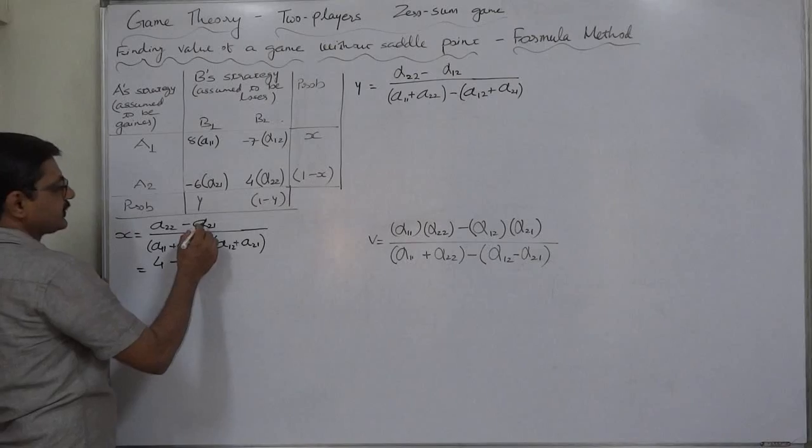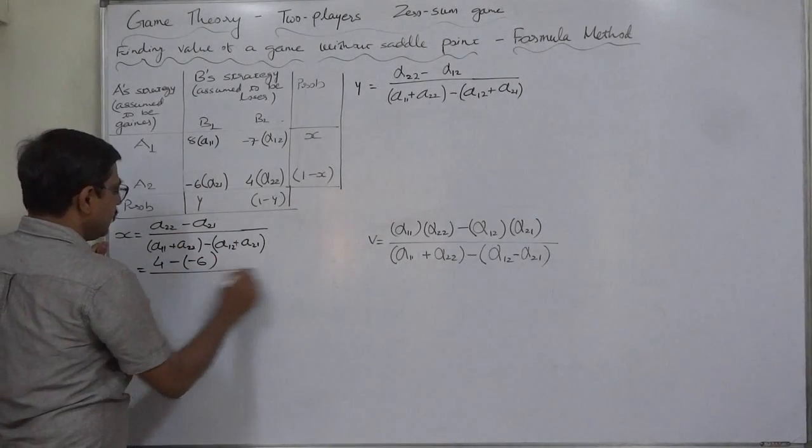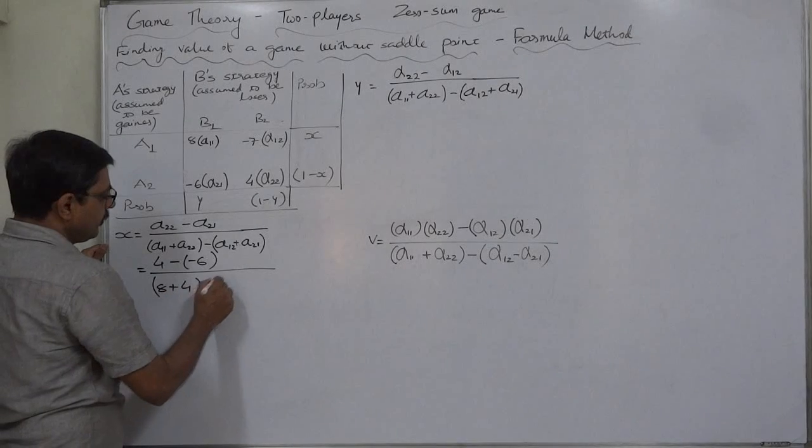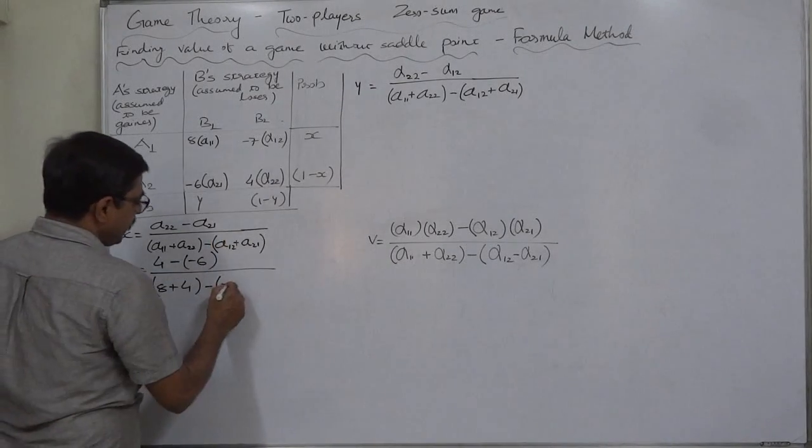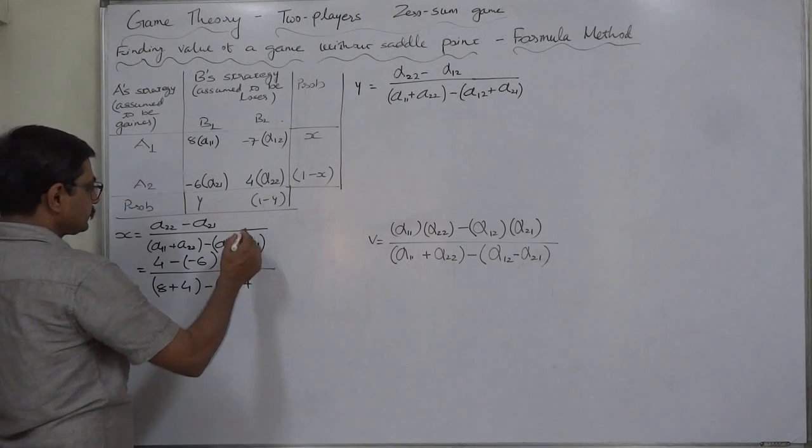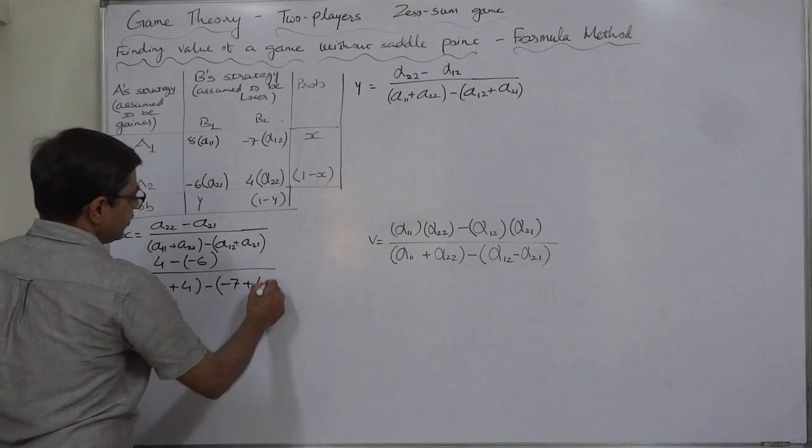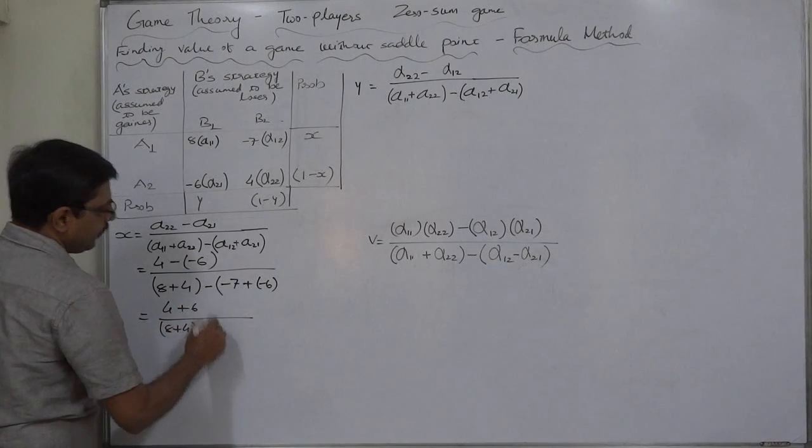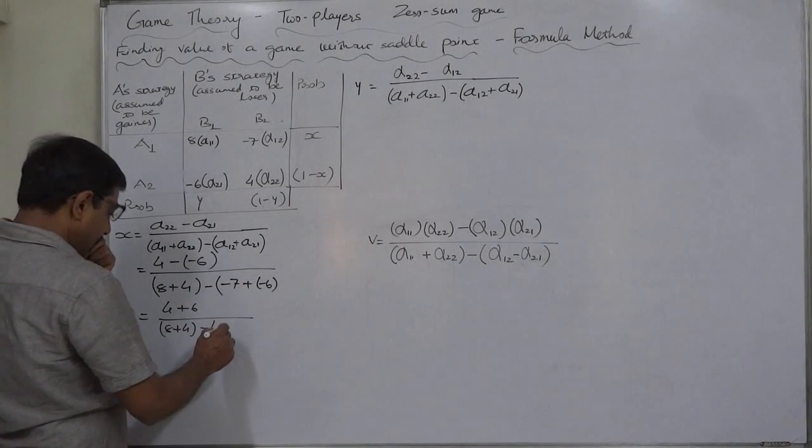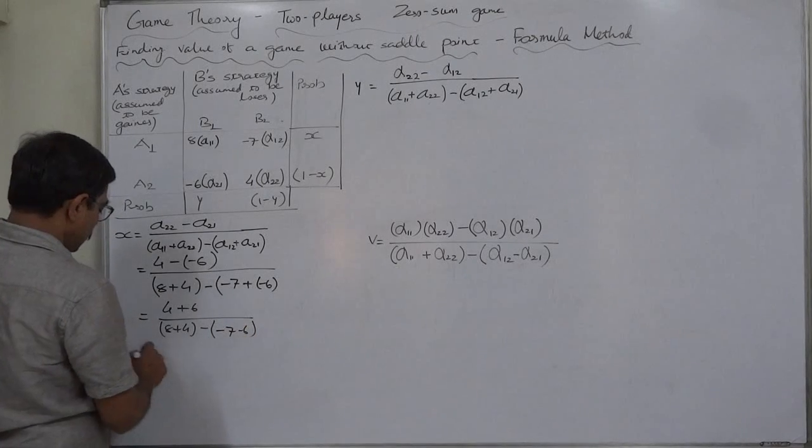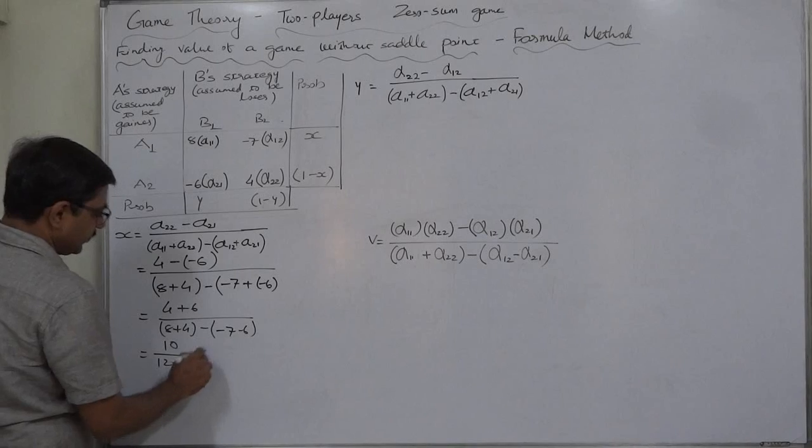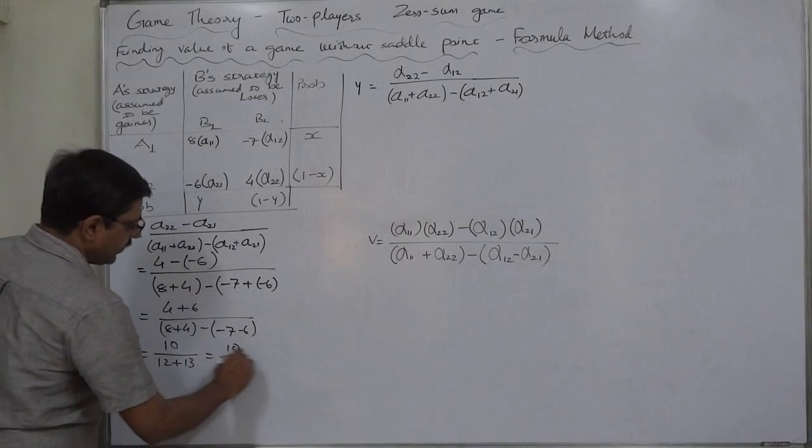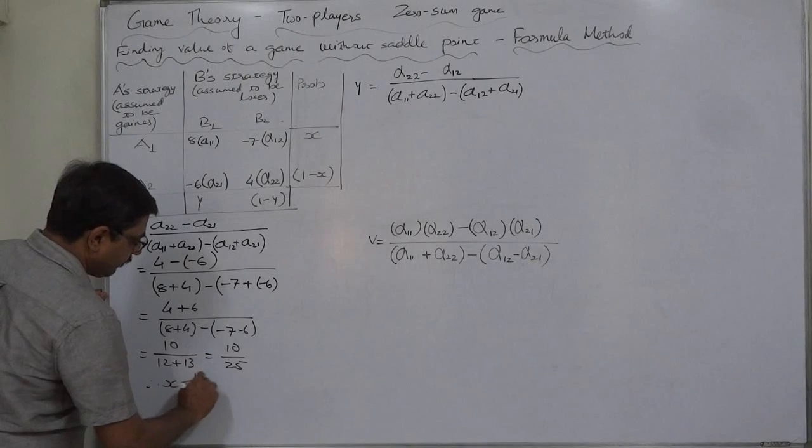Alpha 2 2 is 4 minus alpha 2 1 is minus 6 upon alpha 1 1 is 8 plus alpha 2 2 is 4 minus alpha 1 2 that is minus 7 plus alpha 2 1 that is minus 6. Let's simplify 4 minus minus 6 means 4 plus 6. 8 plus 4 minus minus 7 plus 6 is equal to 10 upon 12 plus 13. So it is 10 by 25. X equals to 10 by 25 means 2 by 5.